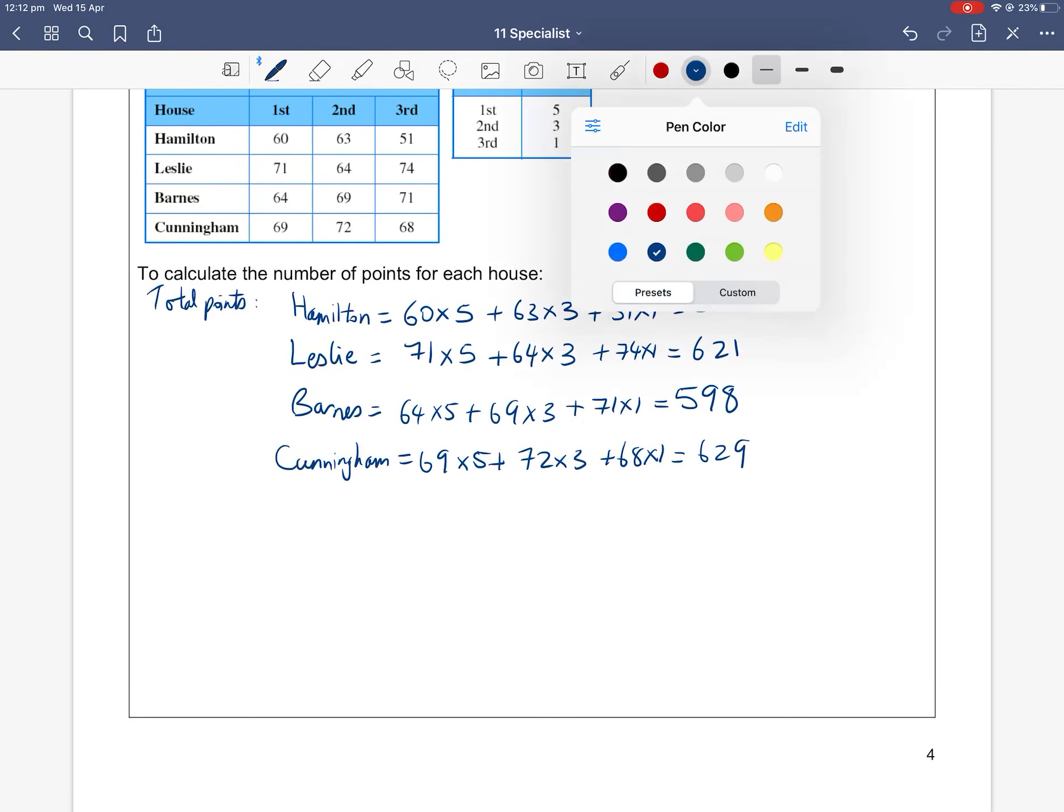But we are talking about matrices. So how do we represent this in a matrix form? Let's define some matrices. Let A be the number of positions for each house. Let B equal the number of points for each position. And then C be the total points. So what I mean is, if A is the number of positions for each house, and I have four houses—H, L, B, and C—and then I have first, second, and third as my positions.